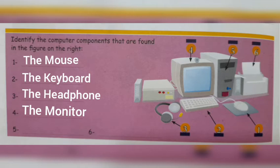Number five — it is the system unit, one of the main parts of our computer. One of the main components. You know, every device like mouse, keyboard, headphone — every device will connect to the system unit.